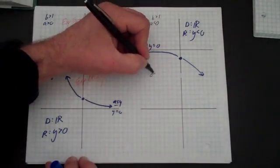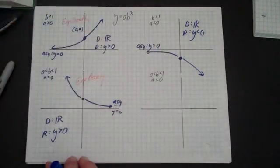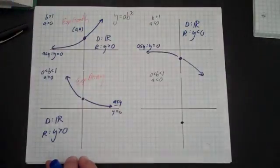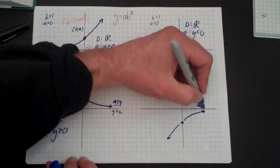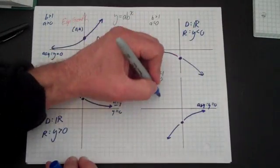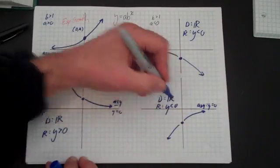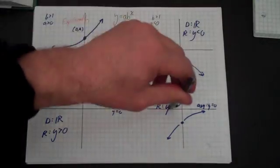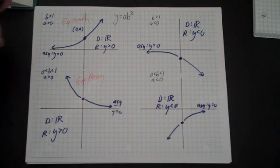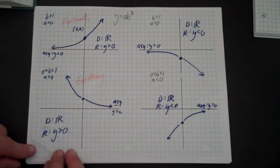The fourth form is when b is between 0 and 1 and a is negative. That's an exponential decay problem that starts at a negative number, and declines further in that direction, with an asymptote at y = 0. The domain is all real numbers and the range is everything less than the asymptote. So whenever you're asked for domain and range of exponential functions, the domain is always all real numbers, and the range is defined by the asymptote — either everything greater than or everything less than it.